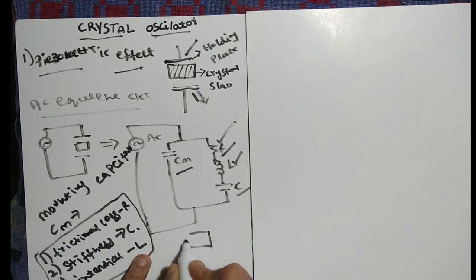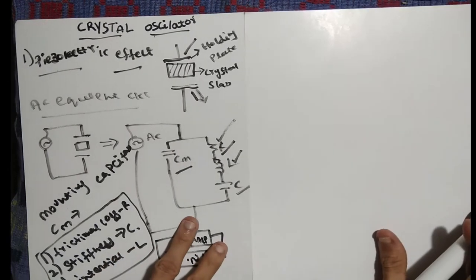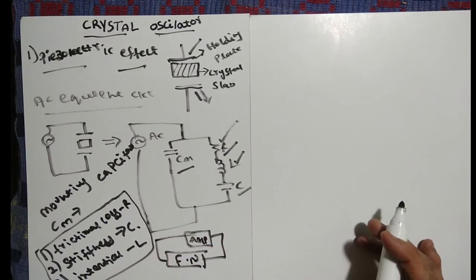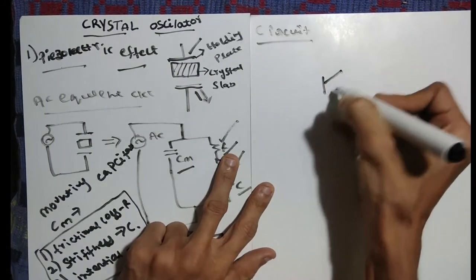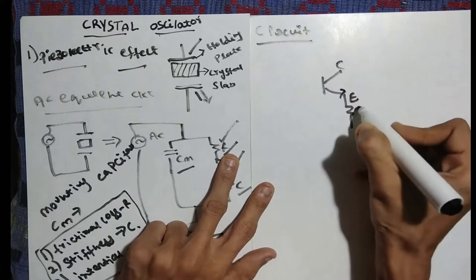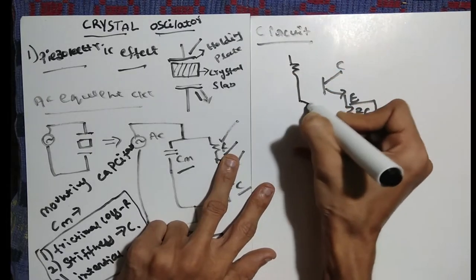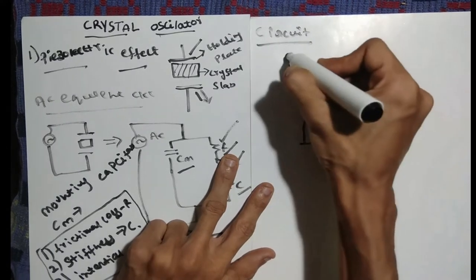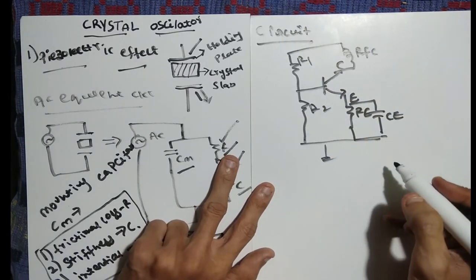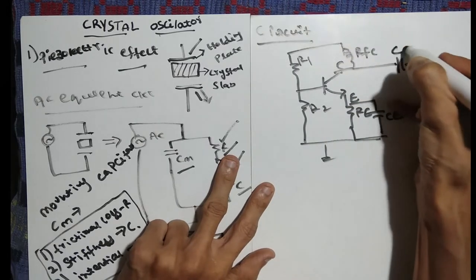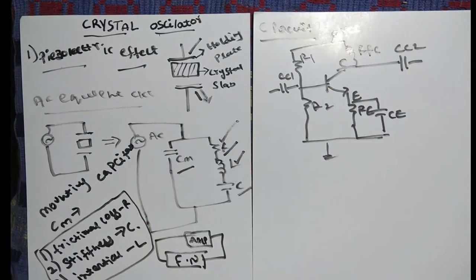Now we can draw the circuit diagram for the crystal oscillator. As usual, any oscillator has an amplifier, a feedback network, and connection back to the amplifier. We use the voltage divider bias transistor technique. The transistor has emitter, collector, Re, Ce, resistances R1 and R2 connected to ground, RFC in the collector path, and coupling capacitors Cc1 and Cc2, with Vcc supply.